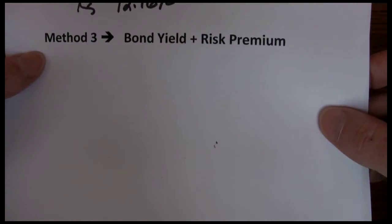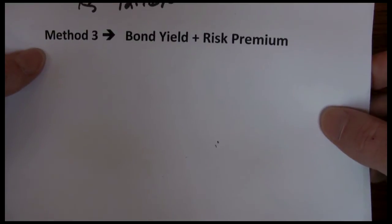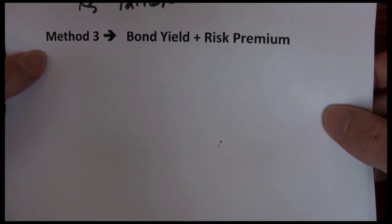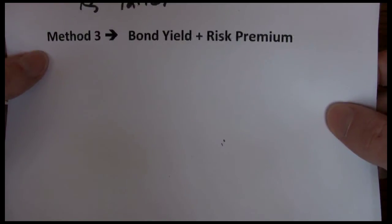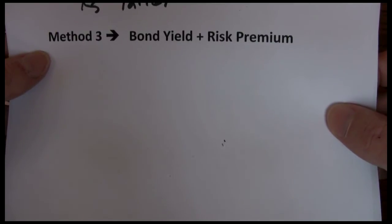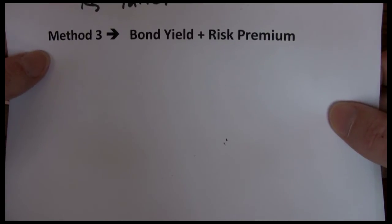Our next backup is the bond yield plus risk premium approach. This is a very simple model conceptually. Go back to chapter one and we learned a couple of things. One, investors are risk averse. They prefer less risk. In order to get them to take more risk, they need extra compensation, a higher rate of return. We also learned that stocks are riskier than bonds.